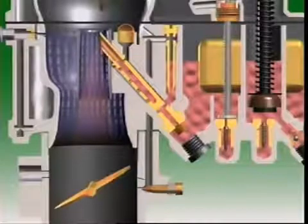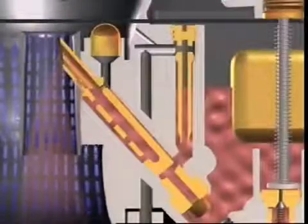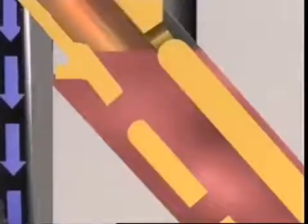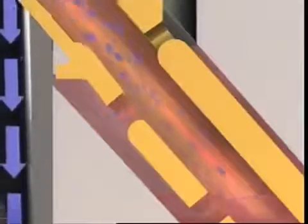This is called compensation by air correction. As the throttle opens and engine speed increases, the level in the jet well falls, exposing air bleed holes in the discharge tube. Air can now mix with the fuel and stop the mixture becoming too rich.